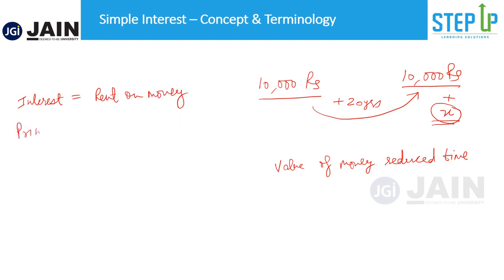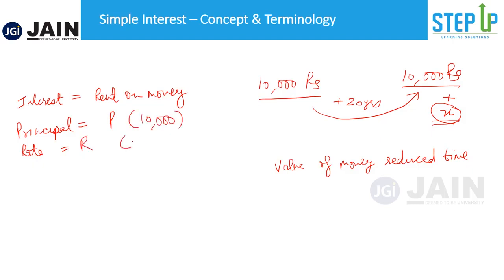The principal is the initial amount that was borrowed — let's say represented by P, which in this case was 10,000 rupees. Then you want to charge a certain rate of interest, represented by R. So let's say you charge a rate of 10% per annum, and you're saying this is simple interest.